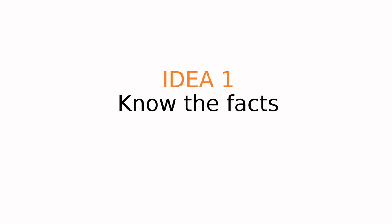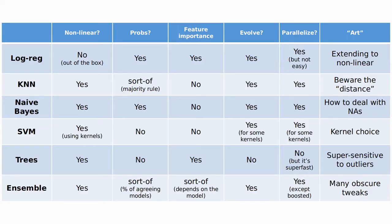Idea number one is know the facts. So in this table, I have summarized different criteria, including the shape of the boundary between one class and the other, the flexibility of the model in order to give you not just classification but also probabilities, if the model is giving information about feature importance or not, if it's evolving, meaning that if you include new information the algorithm is going to adapt or not, it's something that you have to run, you have to train, and then you have to use. So take a look at this table, I'm not going to discuss it thoroughly, but you should print this in order to have this at hand.